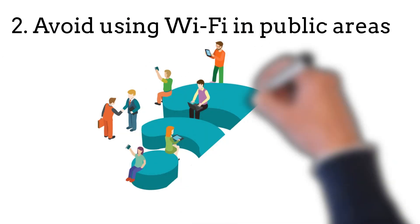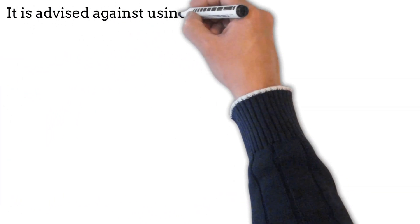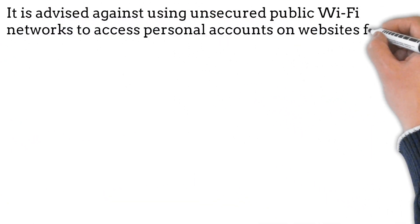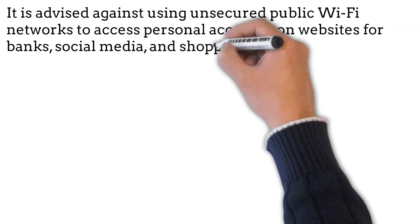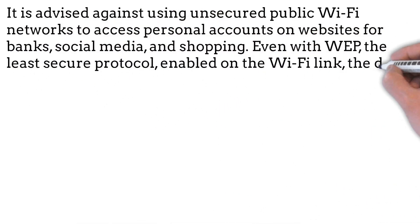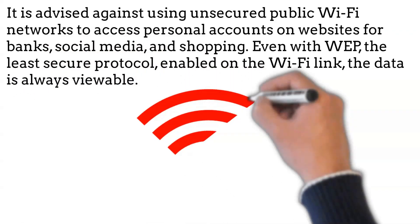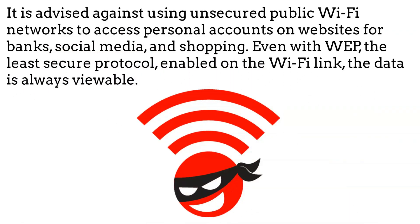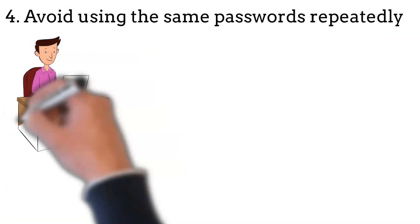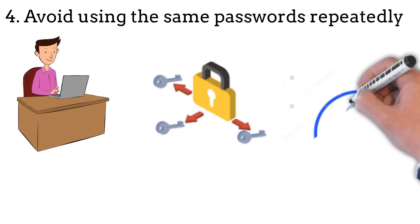The second point is to avoid using Wi-Fi in public areas. It is advised against using unsecured public Wi-Fi networks to access personal accounts on websites for banks, social media, and shopping — even with WEP, the least secure protocol, data transmitted over a Wi-Fi link is always viewable. The third step is to avoid using the same passwords repeatedly.